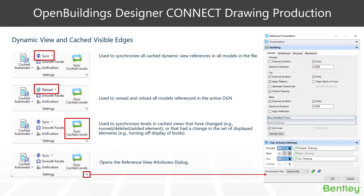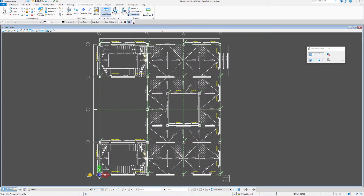The final button we'll look at on this robot menu is the Reference Presentation button. It can be accessed from the button in the bottom right-hand corner, but it can also be obtained from other places. The Reference Presentation button acts as a view attributes dialogue for the view reference to your drawing model.